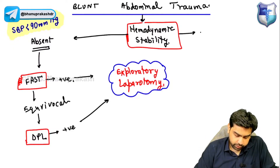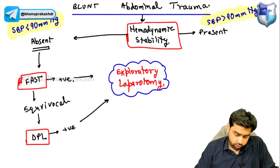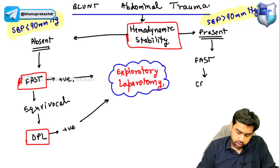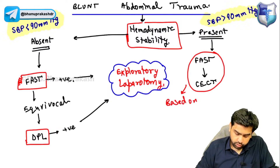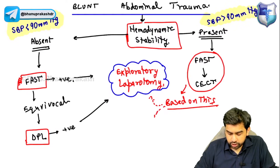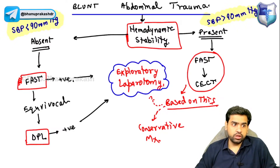Now, if hemodynamic stability is present — meaning the systolic blood pressure is more than 90 mmHg — then the first investigation is FAST, and you also perform a contrast-enhanced CT scan of the abdomen. Based on the results, the treating physician will decide whether the patient needs an exploratory laparotomy or conservative management.